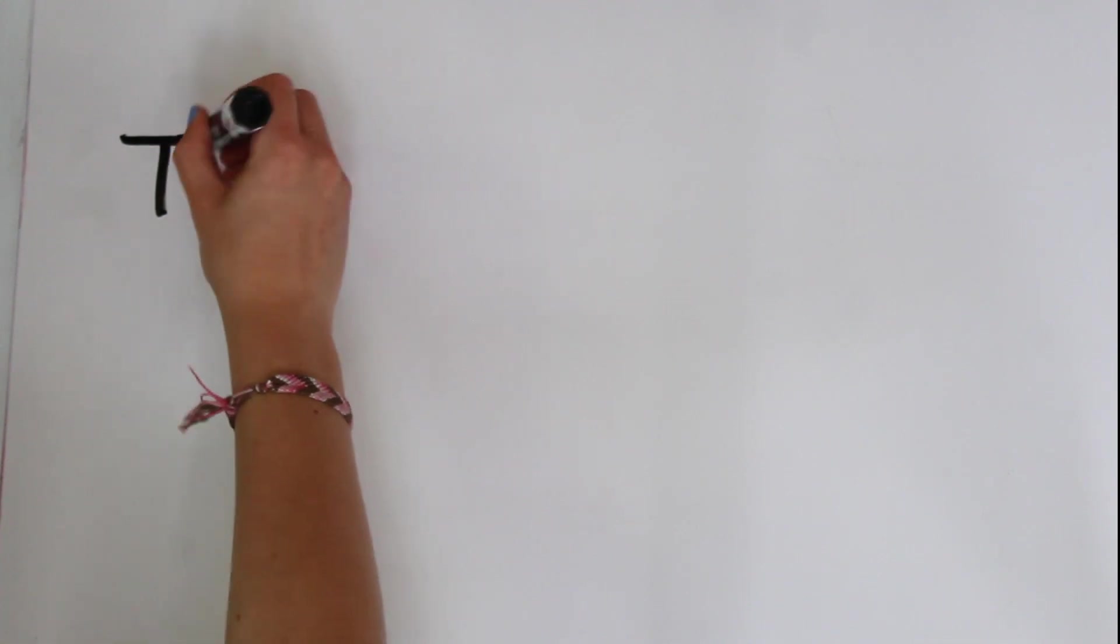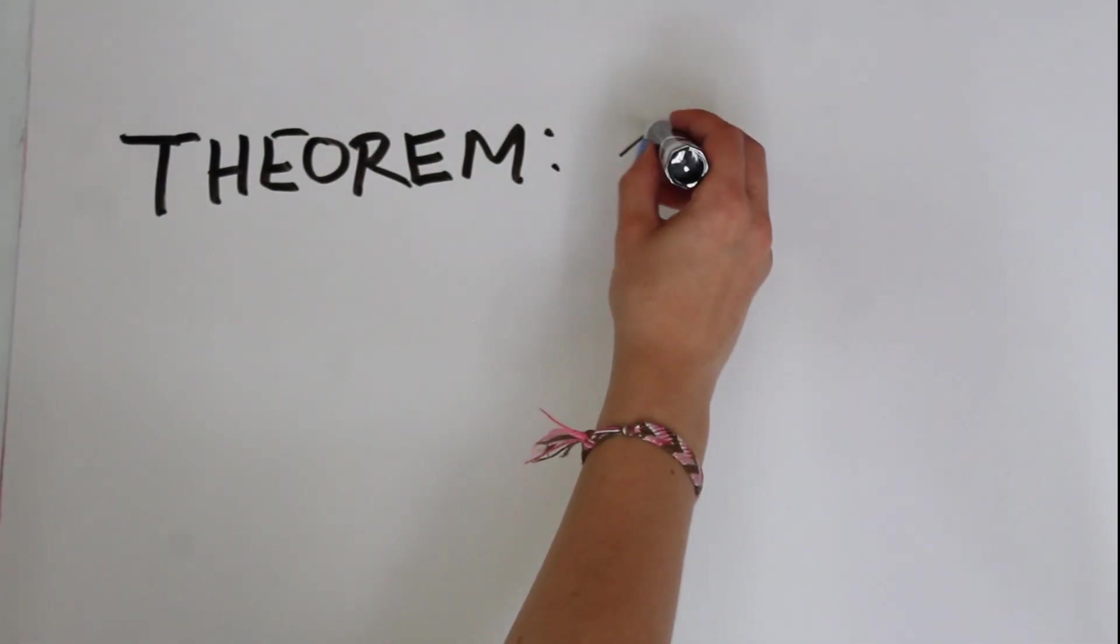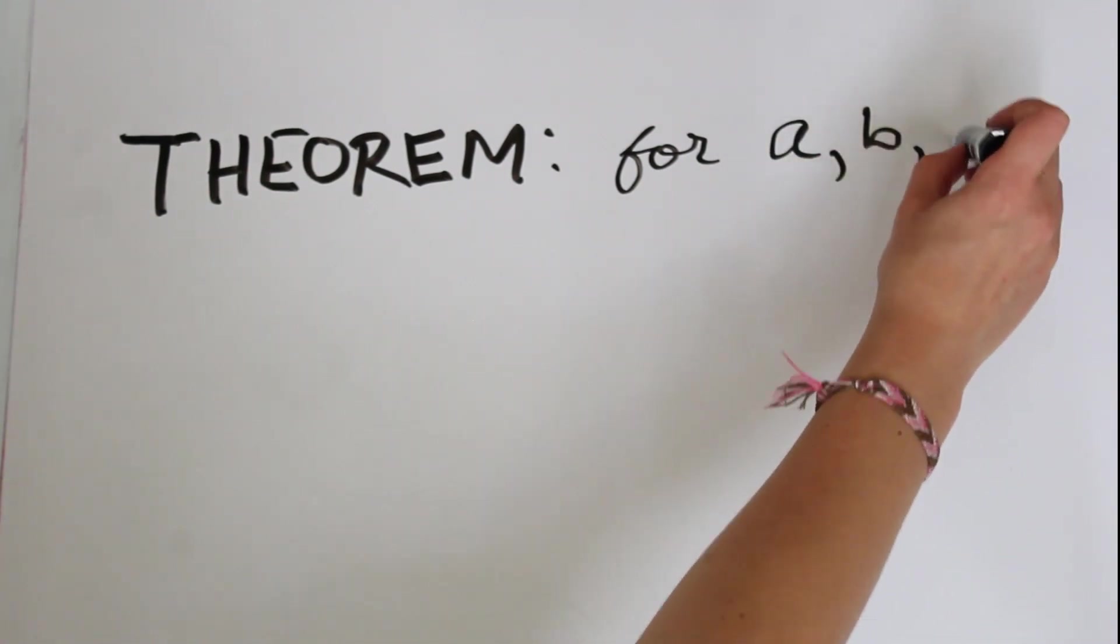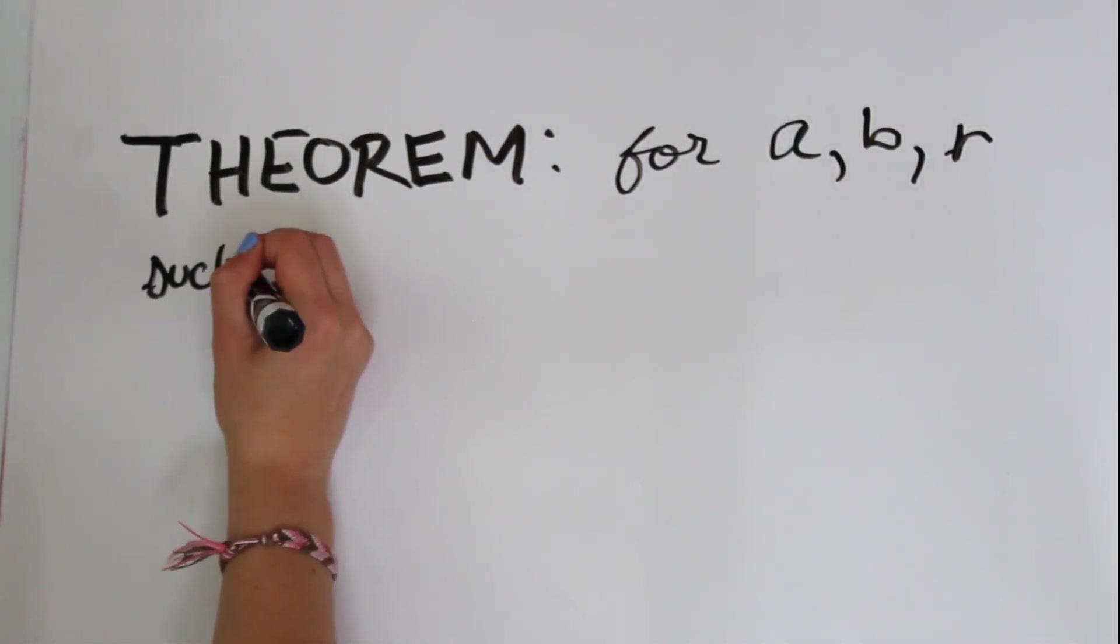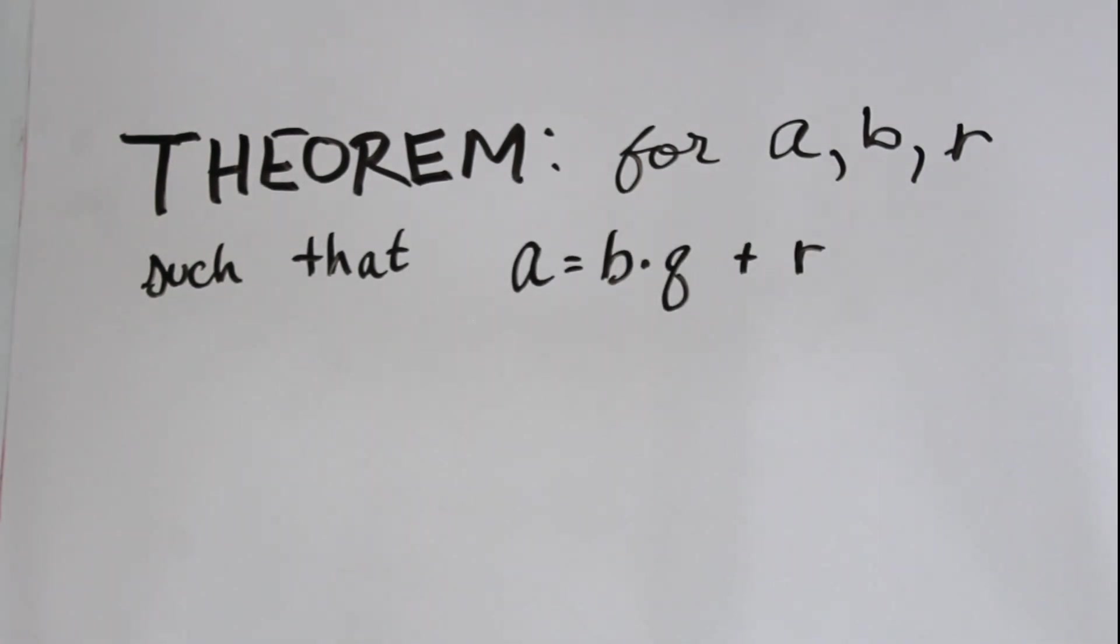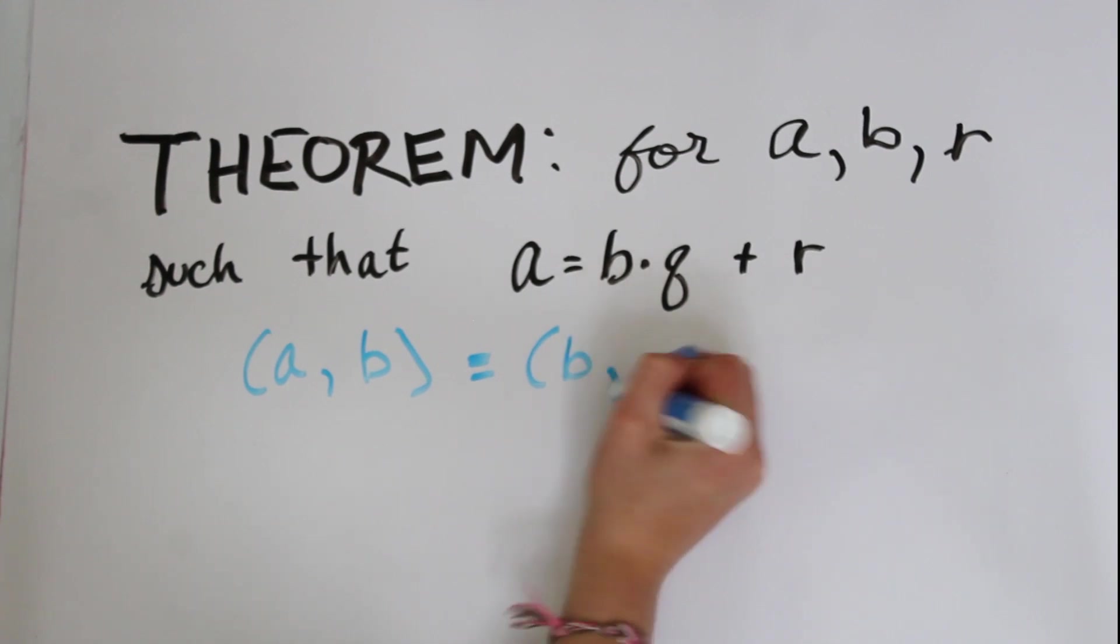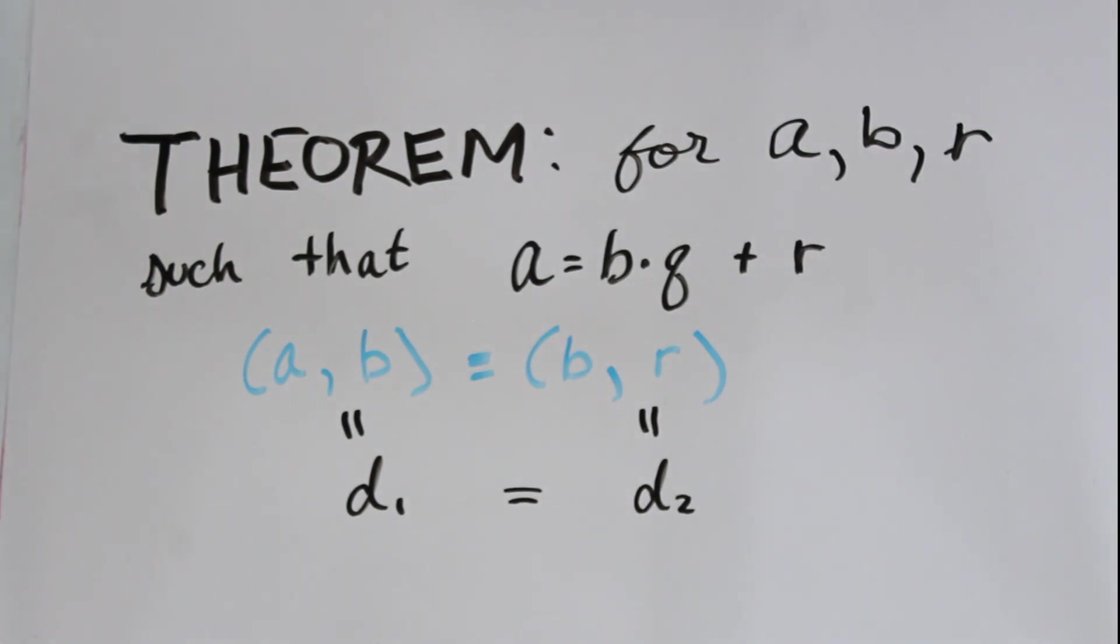Okay, so now comes the big piece. Given any A, B, and R, such that A = BQ + R, I'm claiming that the greatest common divisor of A and B is the same as that of B and R. This may seem like a really big claim right now, but once you see it, it makes a lot of sense.